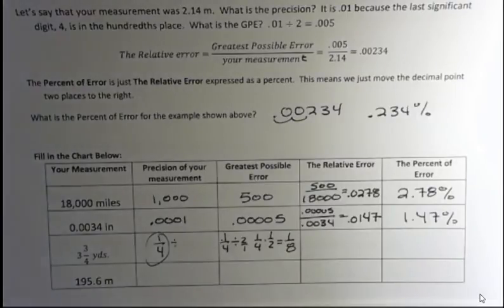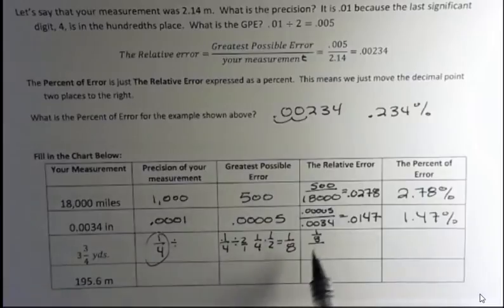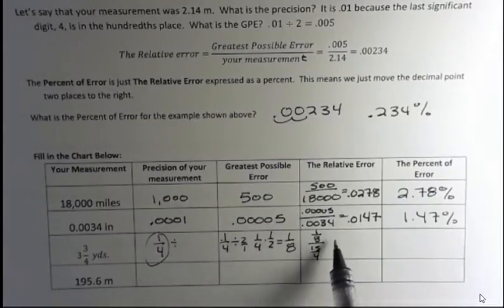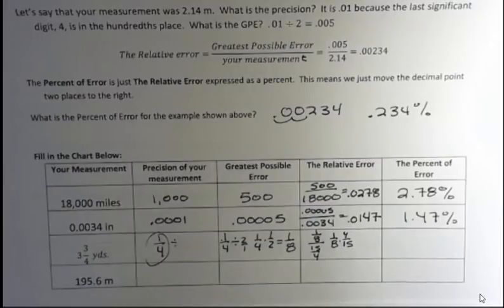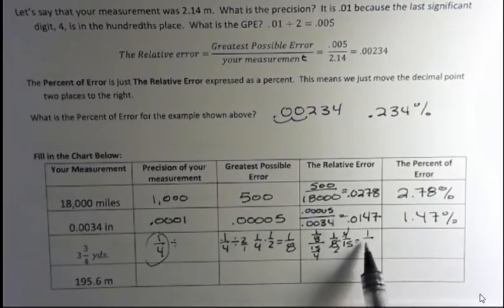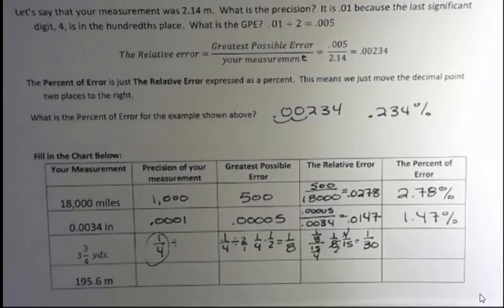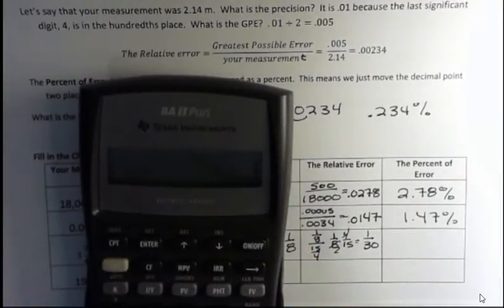Well now the relative error, we're going to take one-eighth and we're going to divide by - I'm going to change this into fifteen-fourths. And that means that instead of dividing by fifteen-fourths, I'm going to actually multiply by four-fifteenths. Four goes into itself once and into eight twice, and one times one is one over thirty. One-thirtieth is our relative error. What is that as a decimal? All you have to do to find that as a decimal to change that into a percent is take one divided by thirty.